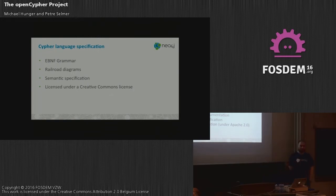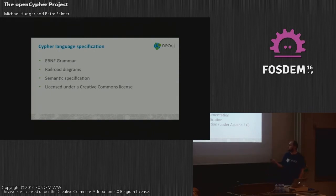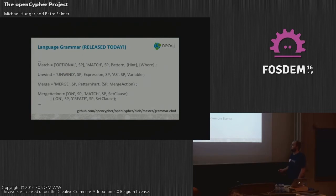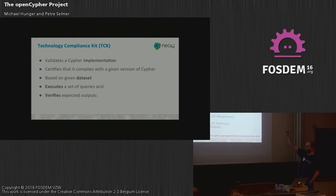Other things we want to do: a TCK for Cypher so you can validate implementations — certifying compliance with a certain version of Cypher by executing queries on certain data sets and comparing results. We want a reference documentation and full language spec, plus a reference implementation under Apache license. For the language spec, we now have the BNF grammar and want to add semantic specification especially around the type system — similar to how Postgres documents SQL. Here's a quick excerpt: this covers match, unwind, and merge, with much more before and after.